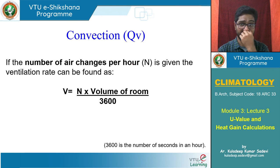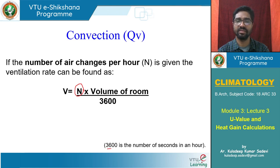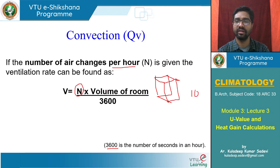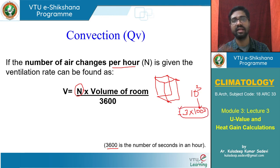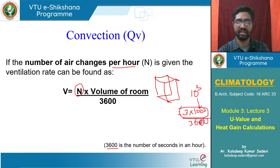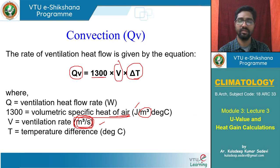The number of air changes per hour is given. Multiplying by volume of the room and dividing by 3600 seconds per hour gives us the ventilation rate in cubic meters per second. For example, a 10 cubic meter room with 3 air changes per hour: 3 × 10 = 30 cubic meters per hour, divided by 3600 gives the ventilation rate per second. This ventilation rate is used in the formula to calculate heat gain through convection.